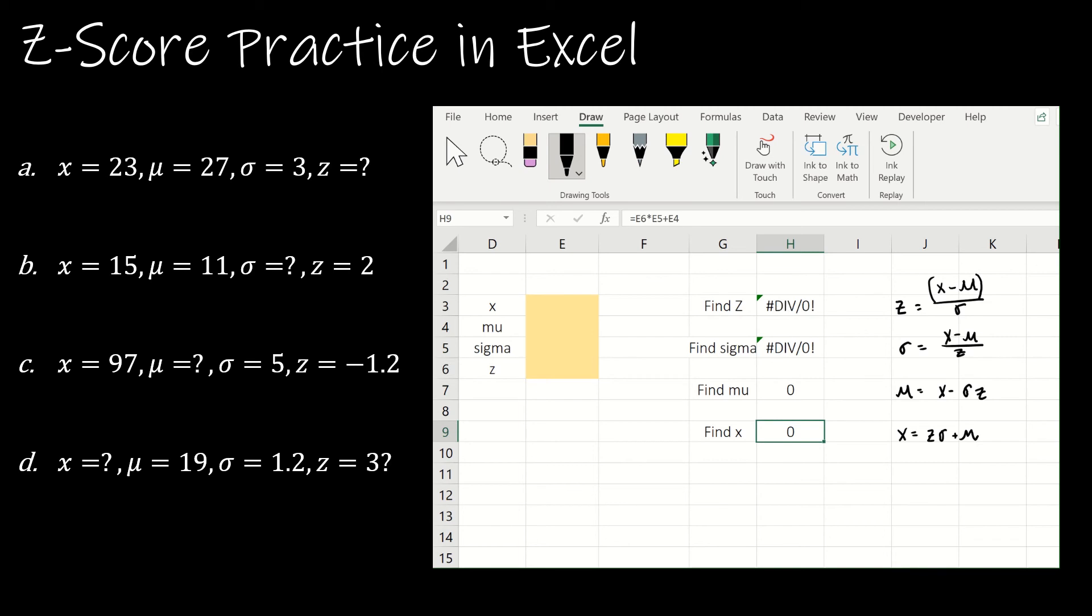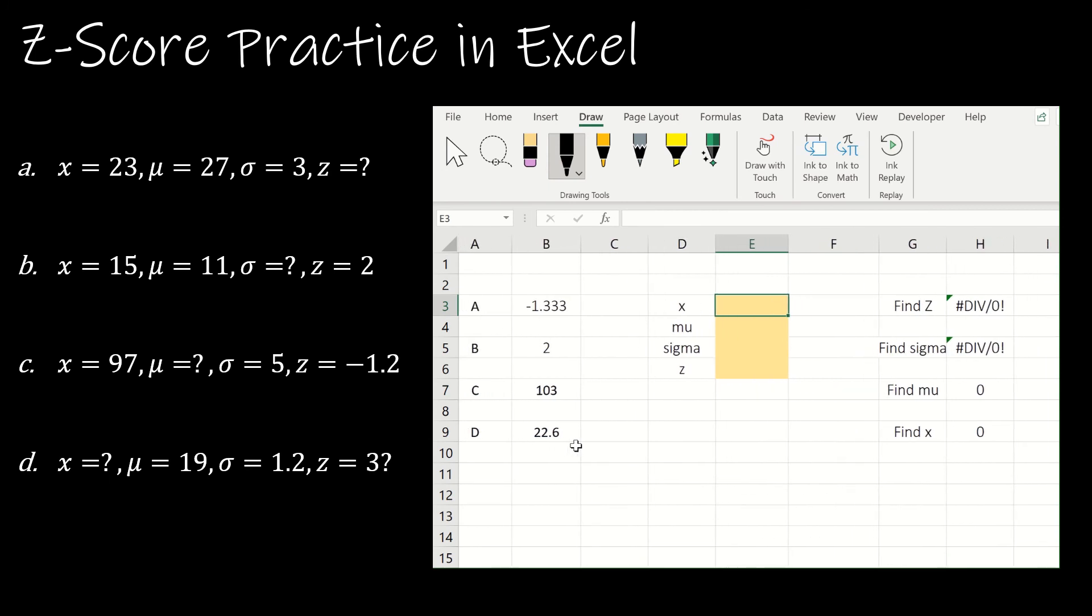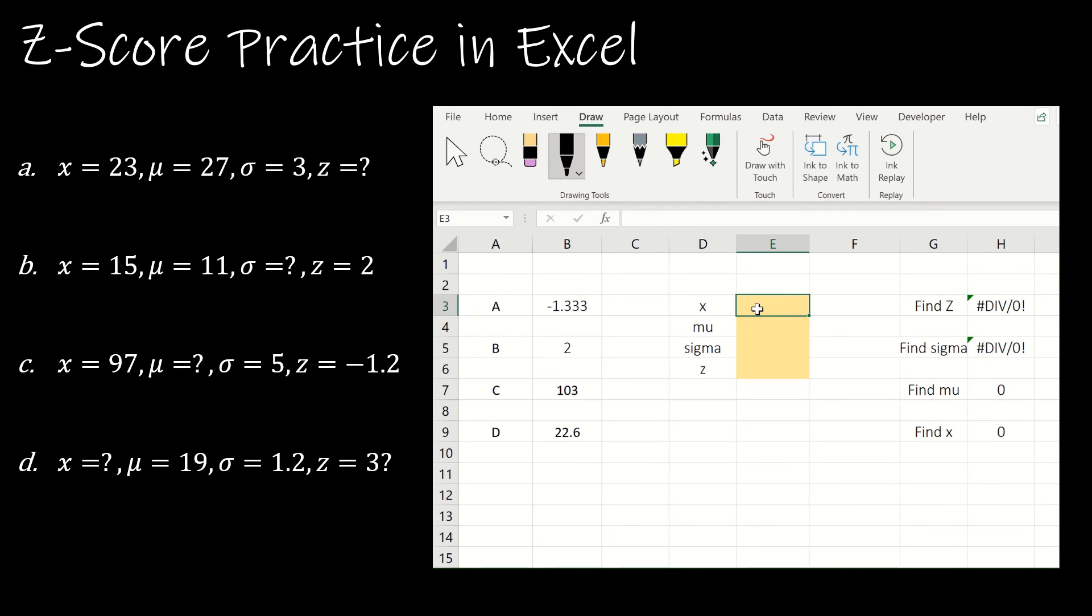So now let's go back to the questions that we were just working on. And we will go ahead and find those values as well. So for the first question, and again, I have entered the correct answers over here for us to look at. So I'm going to leave this part on the screen. So for A, I know I should be getting negative 1.333. So for x, it's 23. For μ, it's 27. For sigma, it's 3. And we're trying to find z. For b, x is 15. μ is 11. We don't know sigma, but we know z is 2. And now sigma is 2. And that's what we found by hand. Good. So far, I'm feeling pretty good about myself.